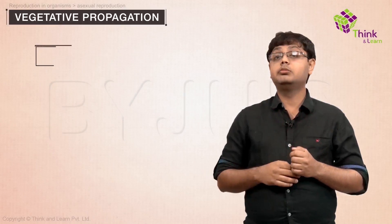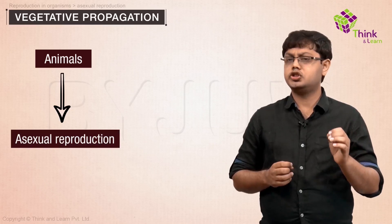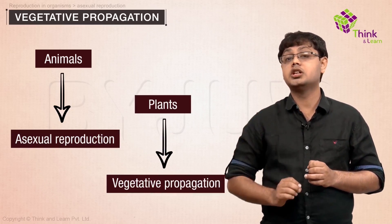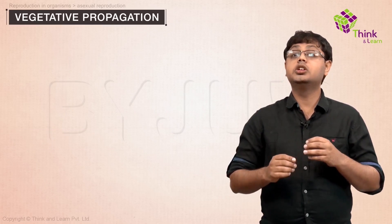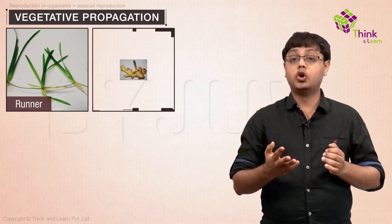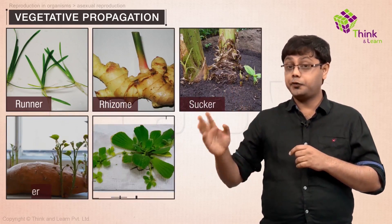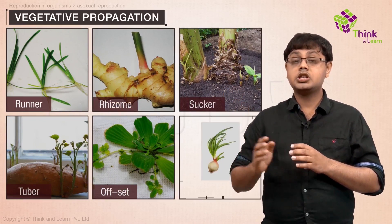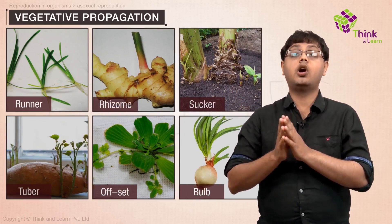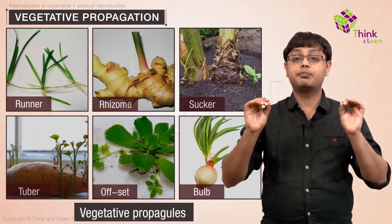While in animals and other simple organisms the term asexual reproduction is used, in plants the term vegetative propagation is frequently used. The units of vegetative propagation such as runners, rhizome, suckers, tubers, offsets, and bulbs are all capable of giving rise to new offspring. These structures are called vegetative propagules.